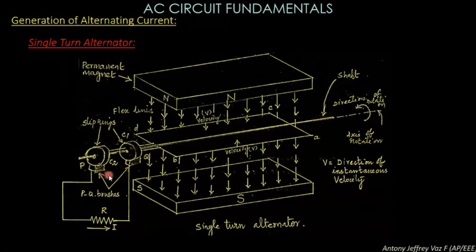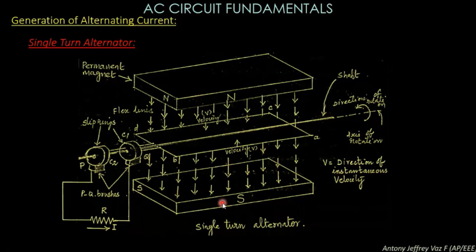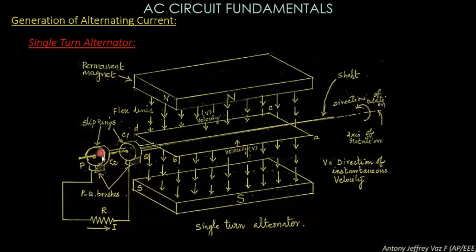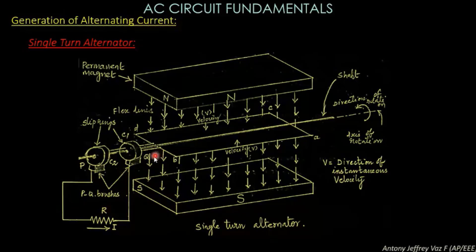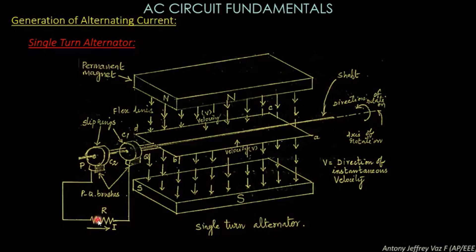In the slip rings, there are two brushes named P and Q. These two brushes are connected to the external resistance R, and the current I flows through the resistance when voltage is induced in the coil. There are two magnets — north pole at top and south pole at bottom. A center shaft is present, and in the center shaft there is a single turn coil. The coil is connected to the slip rings on the shaft, and from the slip rings, two brushes are connected to the resistance which consumes the power generated by the single turn coil. If the coil generates an EMF, that is, a voltage is generated in the coil, then the current will flow through the resistor.